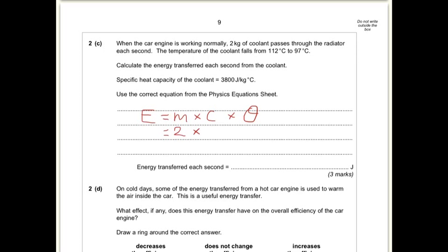Specific heat capacity is 3,800. And the change in temperature is 112 take away 97, which is 15 degrees. So when you multiply all that together, you end up with 114,000 joules.